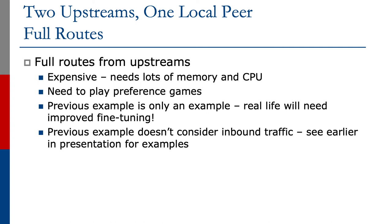Full routes from both upstreams is actually quite expensive — it needs lots of memory and CPU. We need to set local preferences at least on the peering with one upstream, and we need to work out which prefixes to apply local preference to. This is only an example; real life will need improved fine-tuning depending on the connectivity between the upstreams, their customers, their transit providers, and the rest of the internet. The previous example also doesn't consider inbound traffic, but that's covered in earlier examples.